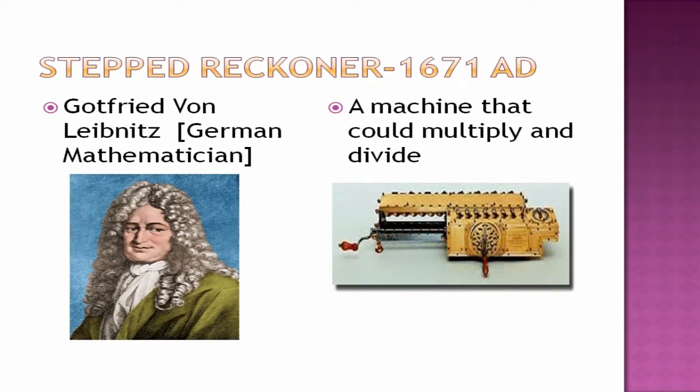Next comes the Leibniz machine. It was developed in 1671 AD by Gottfried von Leibniz, a German mathematician. It is a machine that could multiply and divide.